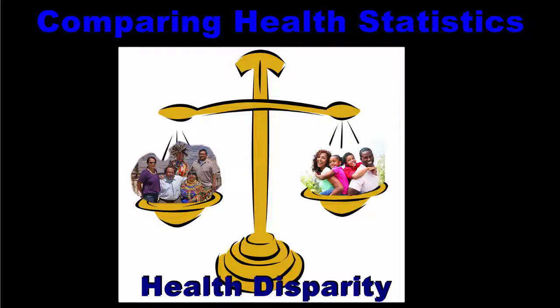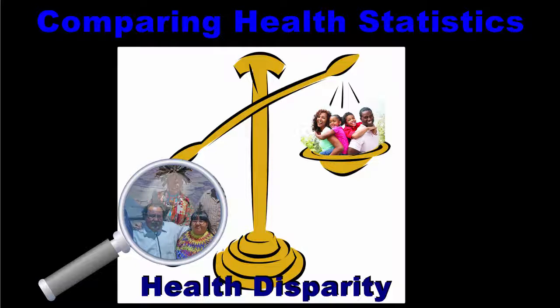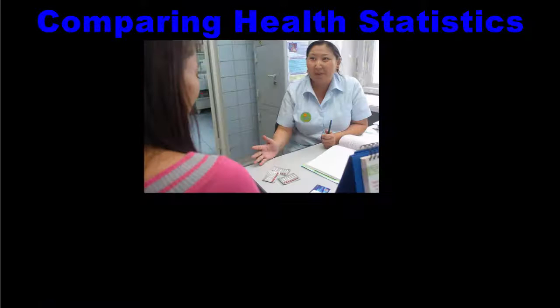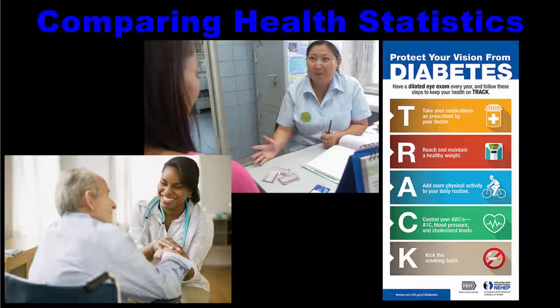A health disparity or gap exists when one group is significantly healthier than another with regards to a particular health indicator. Once a health disparity has been identified, health officials can work to correct it by generating education programs, prevention campaigns, and treatment options that are customized to reach the populations that are most at risk.